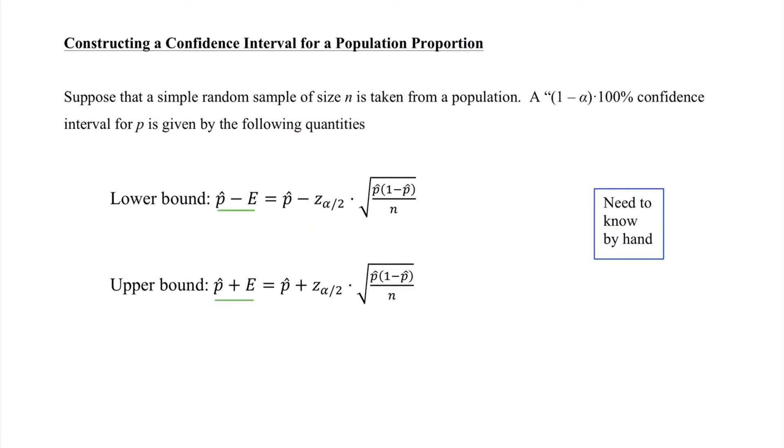That is, the lower and upper bounds are both combinations of our sample proportion, p-hat. And then we are adding or subtracting some margin of error. The margin of error is calculated by incorporating Z-sub-alpha over 2 and then multiplying that by the standard deviation of our sampling distribution of the sample proportions. And Z-sub-alpha over 2 is connected to the level of confidence that we desire when we build the confidence interval.